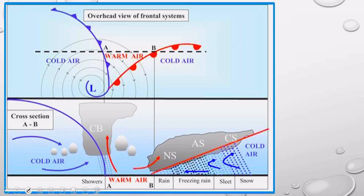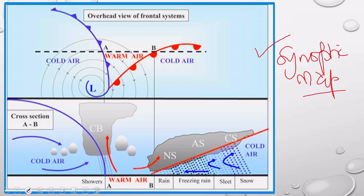Let us now take this one. Here is a plan view, meaning you are seeing the mid-latitude cyclone from the top — as you would see it on a synoptic chart or synoptic map. The examiner often has a question that wants you to draw a cross-section of a mature mid-latitude cyclone. This is an example of the mature stage of a mid-latitude cyclone.